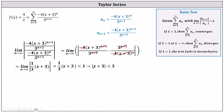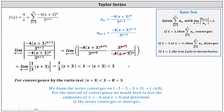Multiplying both sides by three, we have the absolute value of x plus three is less than three. The x plus three inside the absolute value emphasizes the series is centered at x equals negative three. Because the absolute value of x plus three is less than three, the radius of convergence is R equals three. The series converges on the open interval from negative six to zero. For the interval of convergence, we would need to test the endpoints x equals negative six and x equals zero and determine if the series converges or diverges at those values.